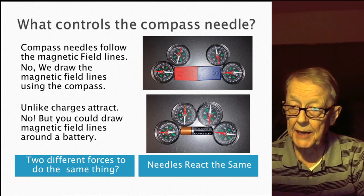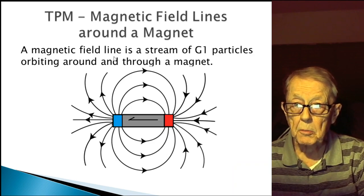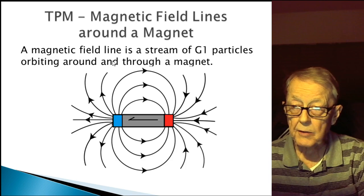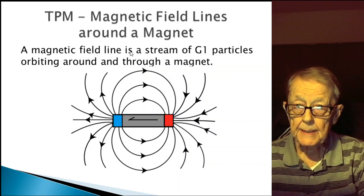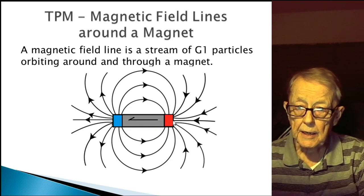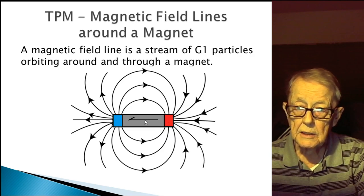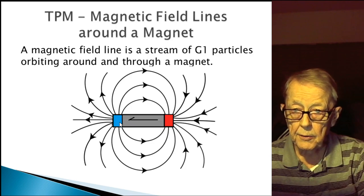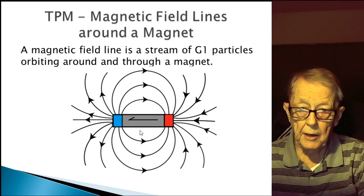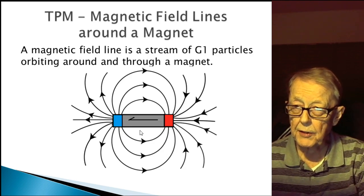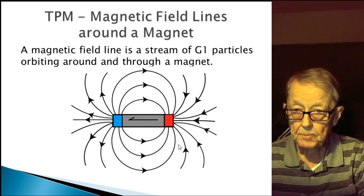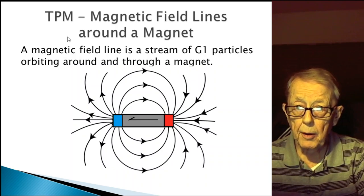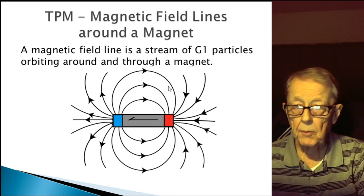In the particle model we have discussed this before. One of my very first videos explained how a magnetic field is generated through a straight copper wire. Through lots of study and analysis, I've determined the G1 particle goes from the north end to the south end of the magnet, out and around and back. They also come in and out the sides, as seen with the iron filings in the first slide. In the particle model, the magnetic field line is a stream of G1 particles orbiting around and through the magnet.